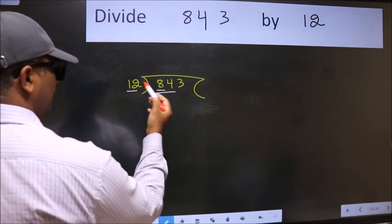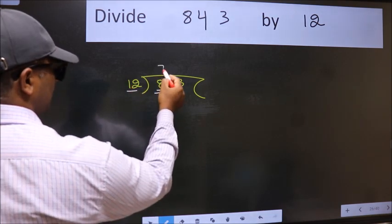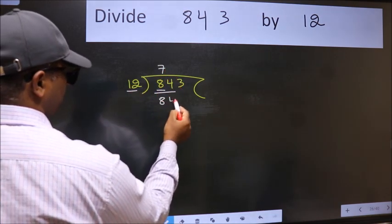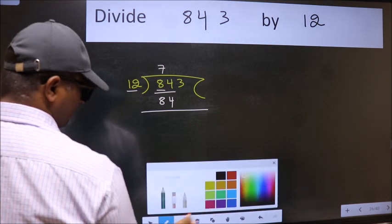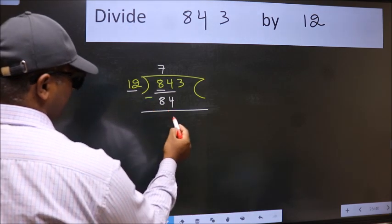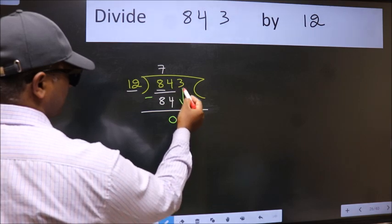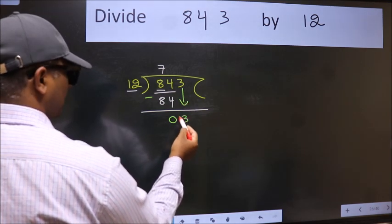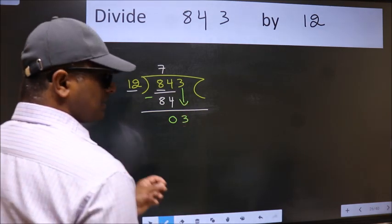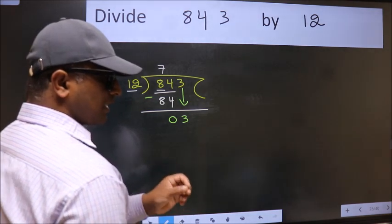When do we get 84 in the 12 table? 12 times 7 is 84. Now we subtract and get 0. After this, bring down the next number, 3. After this step, the mistake happens. And the mistake is this.